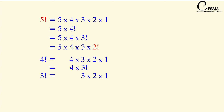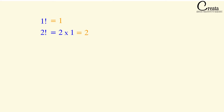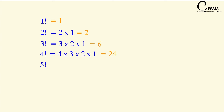Let's calculate the values of some factorials which will be useful in solving mathematical questions. 1 factorial is 1. 2 factorial is 2 into 1, that is 2. 3 factorial is 6. 4 factorial is 24. What is 5 factorial? Take your pen and paper and try to solve it. 5 factorial is 5 into 4 into 3 into 2 into 1, that is 120. If you know 4 factorial, you can easily calculate 5 factorial as 5 into 4 factorial. 4 factorial is 24, so 5 factorial is 5 into 24, that is 120.